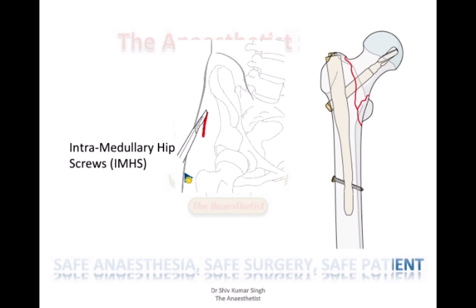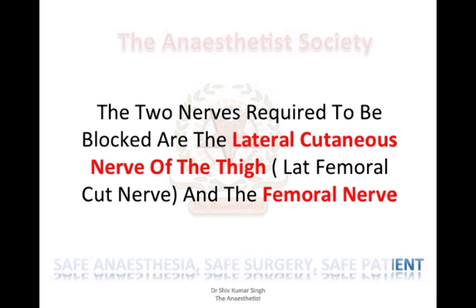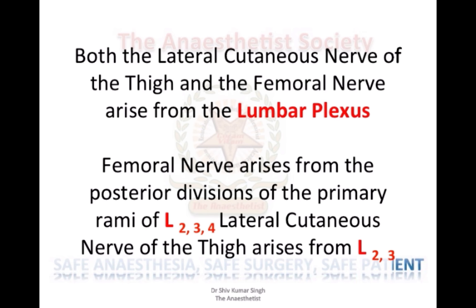The nerves which supply the areas involved in this surgery consist of two nerves: the lateral cutaneous nerve of the thigh and the femoral nerve, both of which come from the lumbar plexus. The femoral nerve arises from L2, L3, L4, and the lateral cutaneous nerve from L2 and L3.